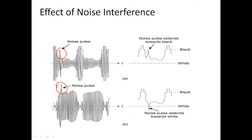In the negative system of modulation, noise pulses extend in the black direction of the signal. When they occur during the active scanning interval, they extend in the direction of the sync pulses. When they occur during the blanking level in the positive system, noise extends in the direction of white during active scanning and in the opposite direction from the sync pulse during blanking. The effect of noise on the picture is less pronounced in negative modulation.